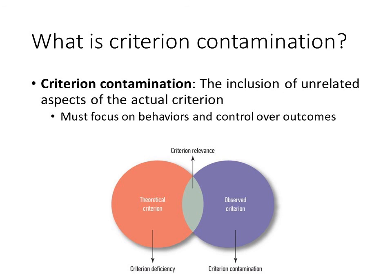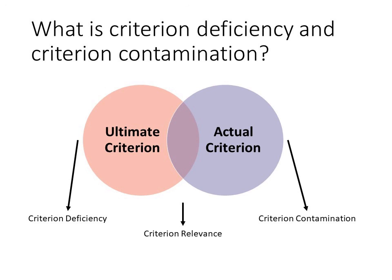Imagine we interview each one of the applicants for the administrative assistant position, and the interviewer rates each one of the applicants. Inevitably, that rater is going to make some mistakes, and those mistakes are also considered contamination. Here is a simple Venn diagram that you can use to complete this week's homework assignments.